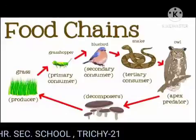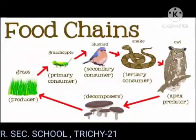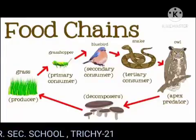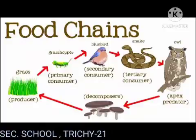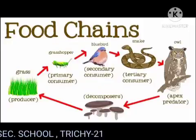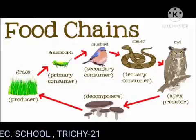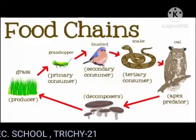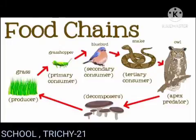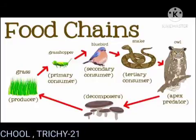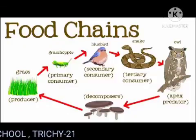Learning about food chains helps us understand the feeding relationships and interactions between organisms in an ecosystem. It also helps us appreciate energy flow and nutrient circulation. This is important because pollution impacts ecosystems, and the food chain can be used to understand the movement of toxic substances and their impacts.